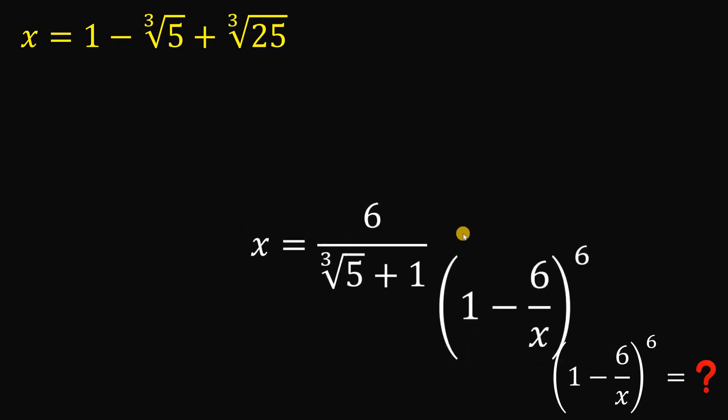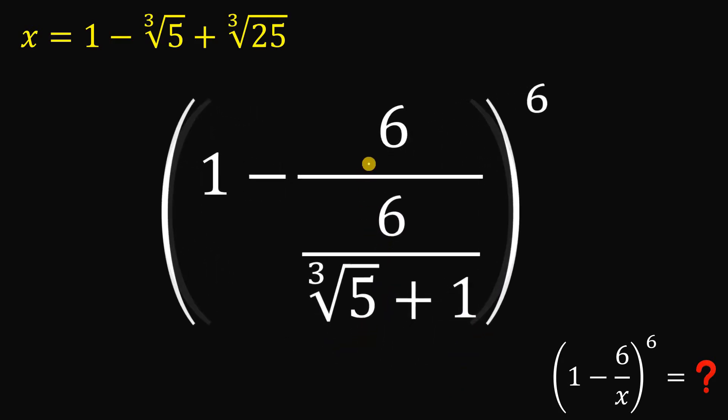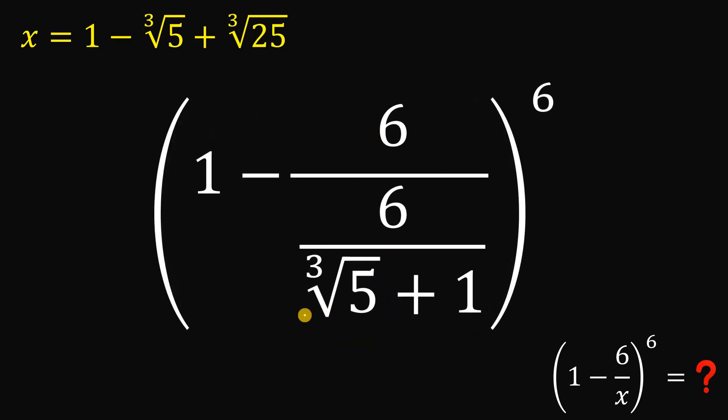Now, from here, let's evaluate this expression. Let's replace this x with this equivalent 6 over cube root of 5 plus 1. Now, from here, in this fraction, let's multiply the numerator and denominator by 1 over 6, so this 6 becomes 1.